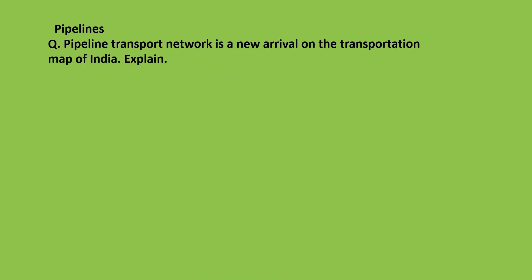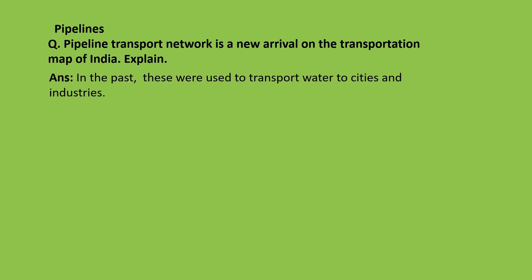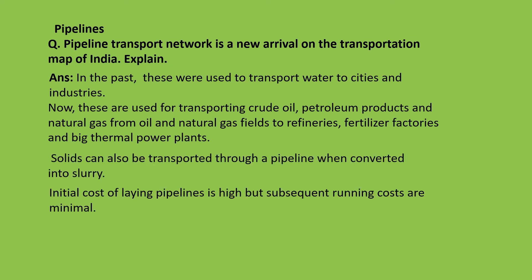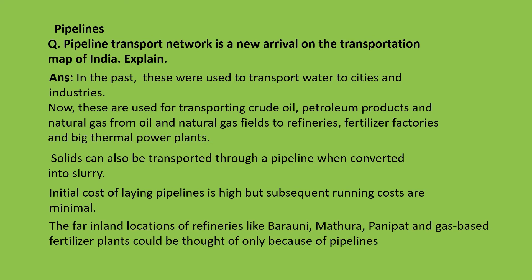Pipelines — pipeline transport network is a new arrival on the transportation map of India. In the past they were used to transport water to cities and industries. Nowadays, these are used for transporting crude oil, petroleum products, and natural gas from oil and natural gas fields to refineries, fertilizer factories, and big thermal power plants. Solids can also be transported through pipeline when converted into slurry — slurry is a concentration of ore plus water. Initial cost of laying a pipeline is high but subsequent running costs are minimum. The far inland location of refineries like Barauni, Mathura, and Panipat, and gas-based fertilizer plants, could be made possible only because of pipelines.